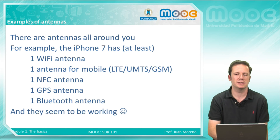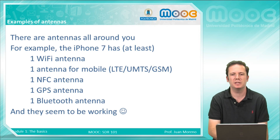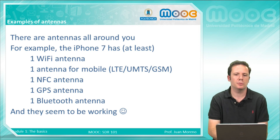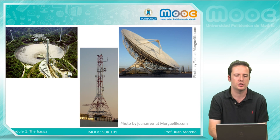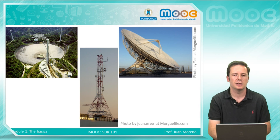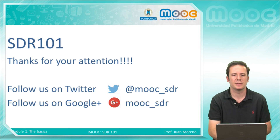Examples of antennas: there are a lot of antennas all around you. A good example is a common smartphone — for instance, the iPhone 7 has at least 5 antennas: the Wi-Fi antenna, the mobile communications antenna, the NFC antenna, the GPS antenna, and the Bluetooth antenna. In the pictures there are also other examples: on the left is the Arecibo radio telescope in Puerto Rico, which is a huge antenna. In the middle is a tower with a lot of antennas on it, and the third one is a very big reflector.